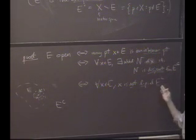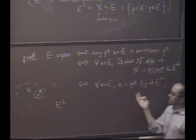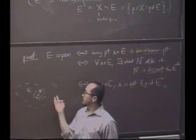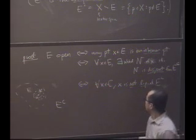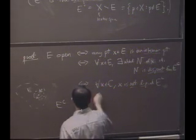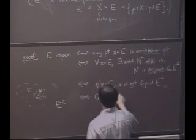Because if it were a limit point of e-complement, any neighborhood of x should contain a point of e-complement, and this one doesn't. So this is the same as saying e-complement contains all its limit points.